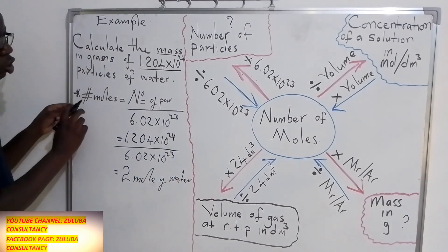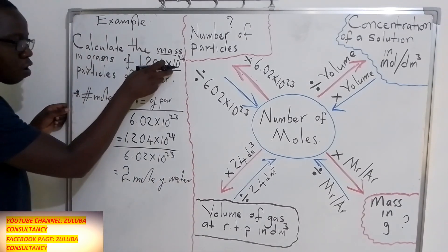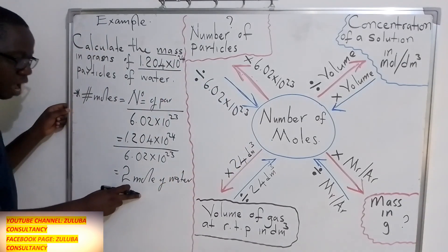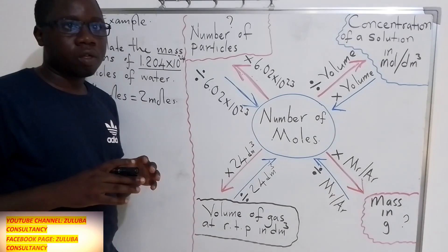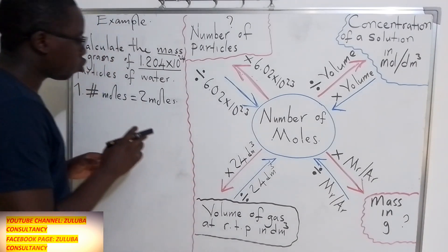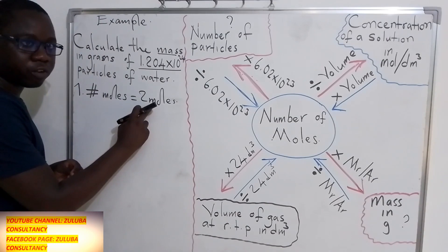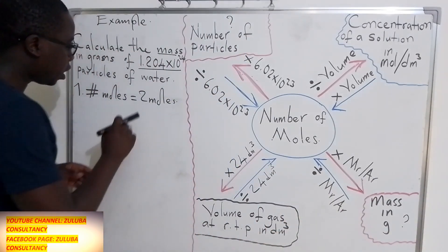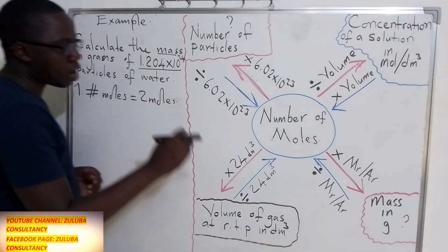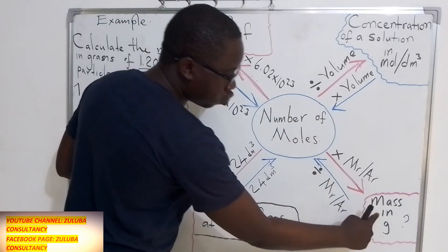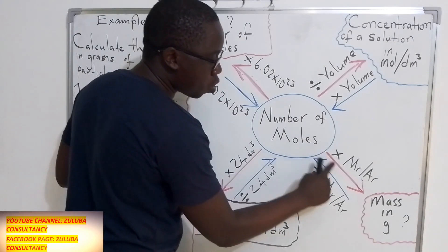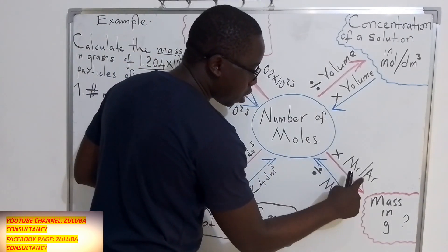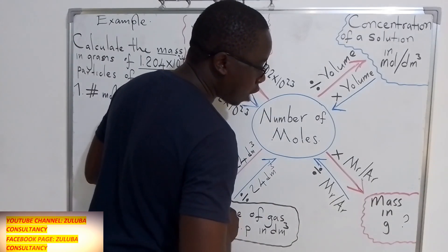We have managed to use the number of particles and the link to calculate the number of moles. The next step is to convert the number of moles we have calculated into mass. We multiply the number of moles by the relative molecular mass or the relative atomic mass.